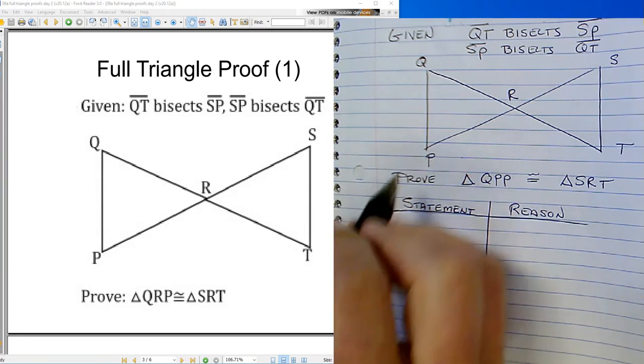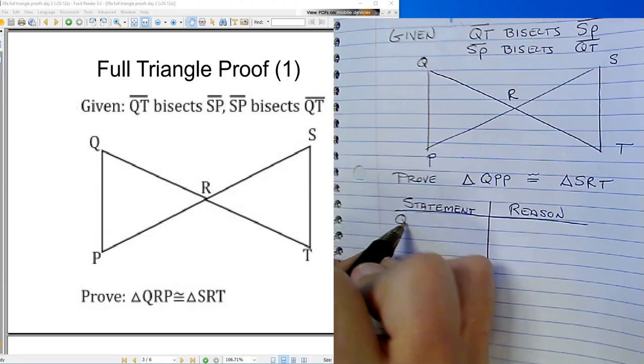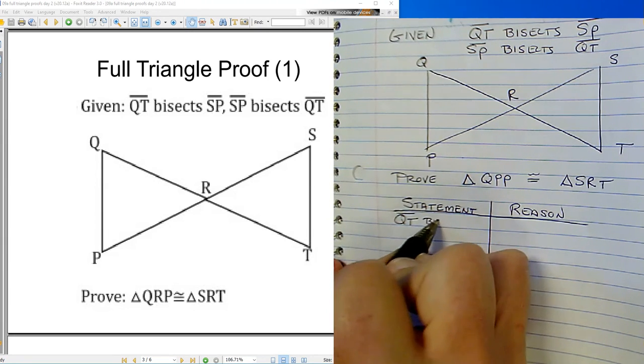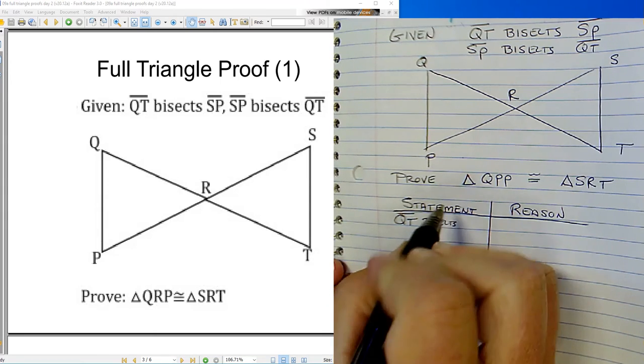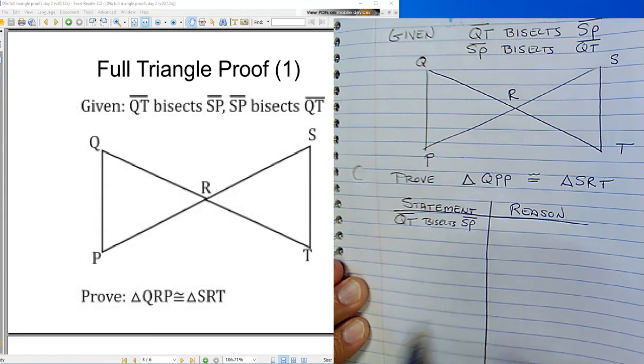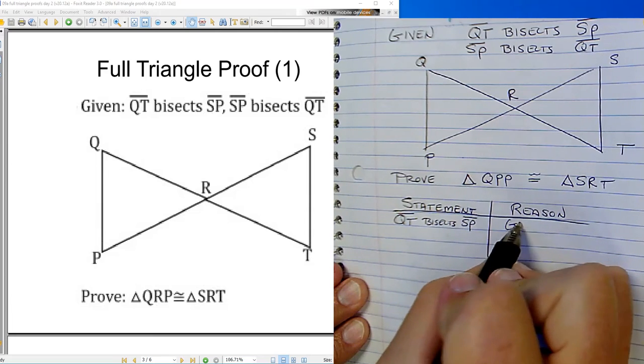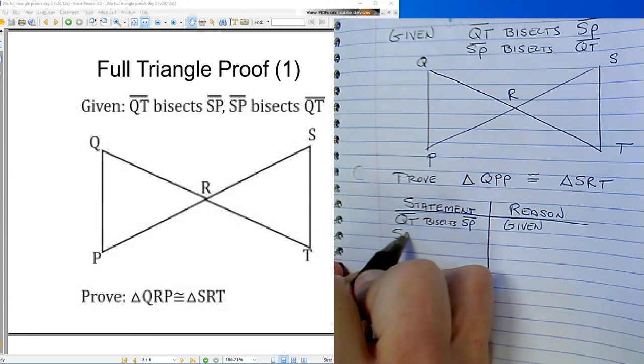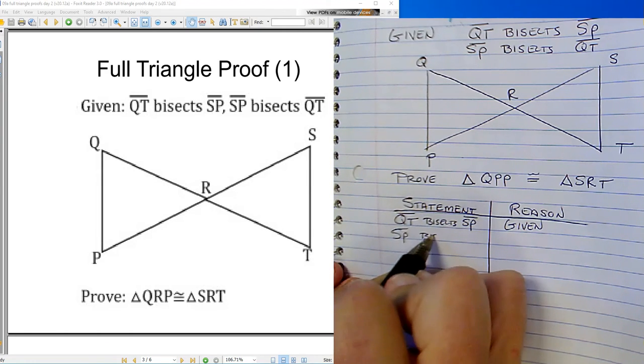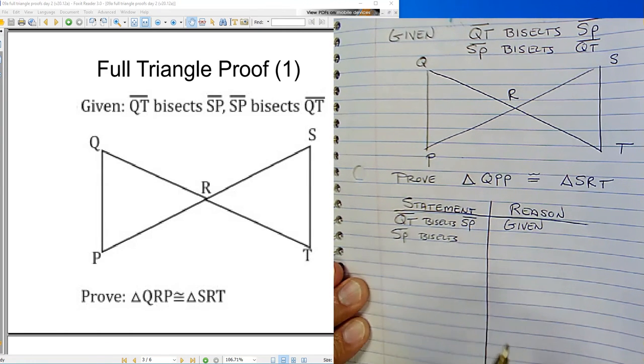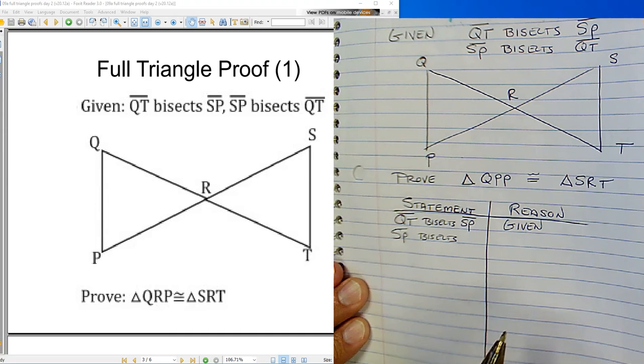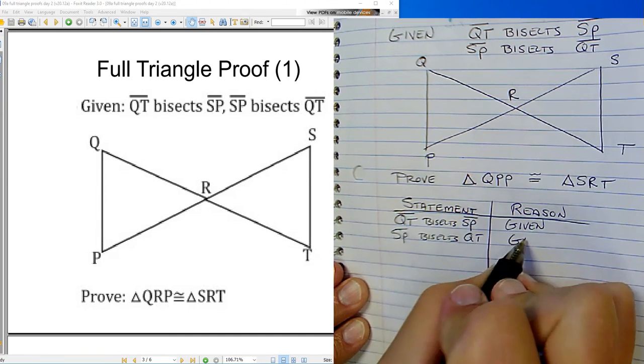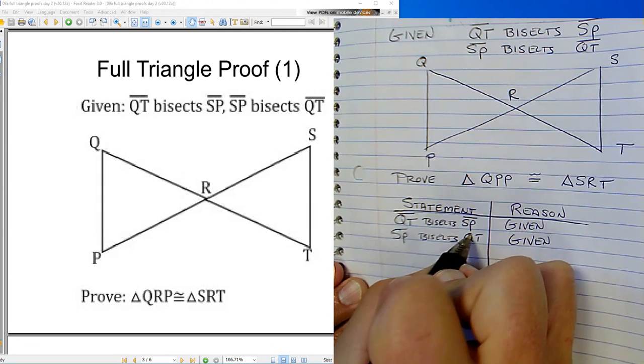Let's bring in the givens first. So QT bisects SP. That's given. And SP bisects QT. Also given.